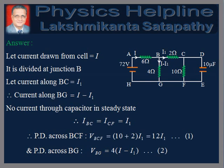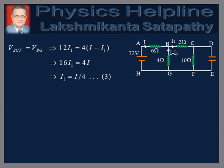Therefore, potential difference across BCF is equal to 12I1, and potential difference across BG is equal to 4 into (I minus I1), which implies 16I1. It can be seen that the potential difference across BCF equals the potential difference across BG. Equating the two: 12I1 = 4(I minus I1), which implies 16I1 = 4I, therefore I1 = I/4.